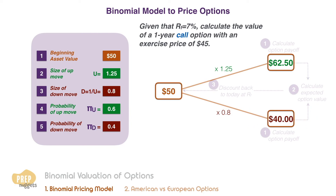So our first step is to calculate the payoff of the call option for both the up and down moves. Using the formula for the payoff at expiration for a call option, the payoff in the event of an up move is $17.50. The payoff in the event of a down move is zero, as the option expires out of the money.